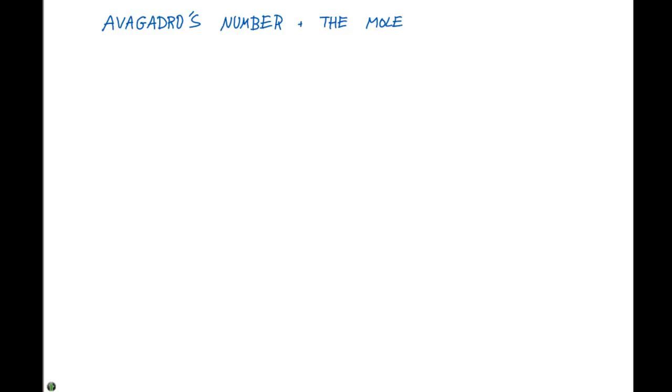In a previous section we discussed Avogadro's number and the mole. But I want to reiterate here that one mole is going to equal 6.022 times 10 to the 23rd of something.